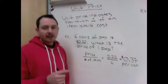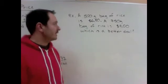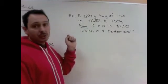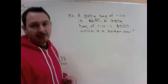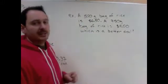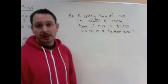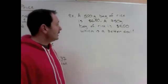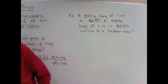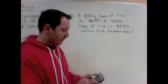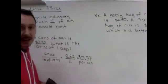So we can also use unit price to compare different sizes. So let's say we go to a store and they have two sizes of something. There's a 500 gram bag of rice, which is going to cost $6.50, and a 750 gram bag of rice, which costs $9, which is a better deal. So to know which is a better deal, we're going to divide the, back to our last one, price divided by the number of items.